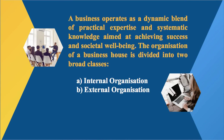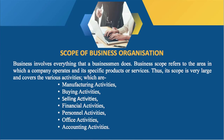The organization of a business house is divided into two broad classes: internal organization and external organization. Now let us talk about the scope of business organization. Business involves everything that a businessman does. It includes trade, commerce and industry. Business scope refers to the area in which a company operates and its specific products or services. The scope of a business is very large and covers various activities.